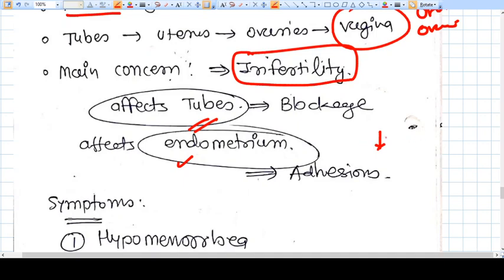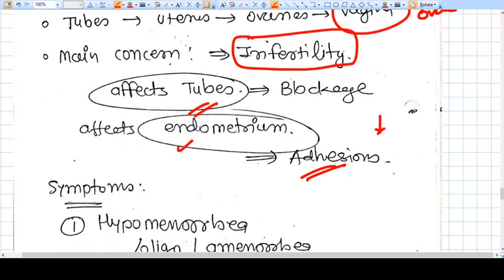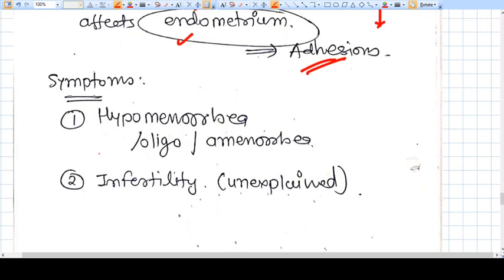And it will cause adhesions, so it will cause menstruation problems. What are the symptoms? You have hypomenorrhea, oligomenorrhea, amenorrhea, and infertility.